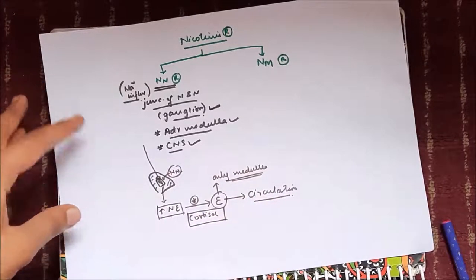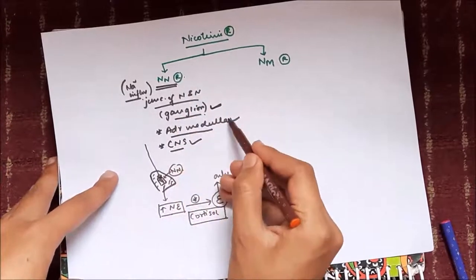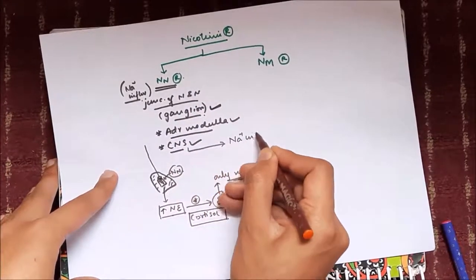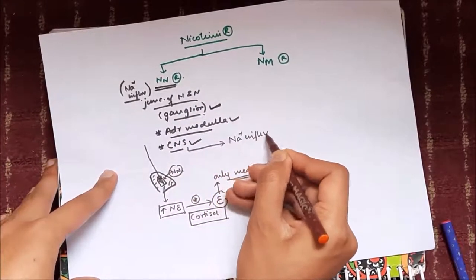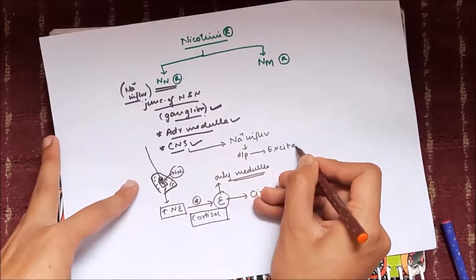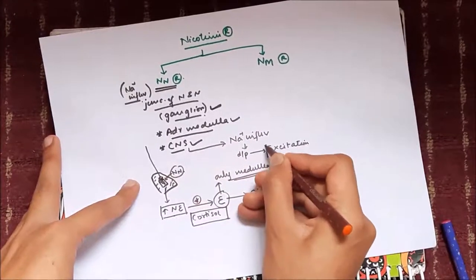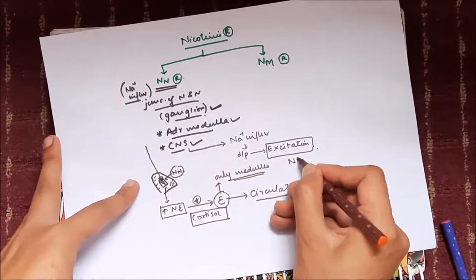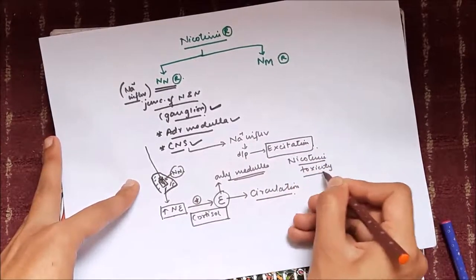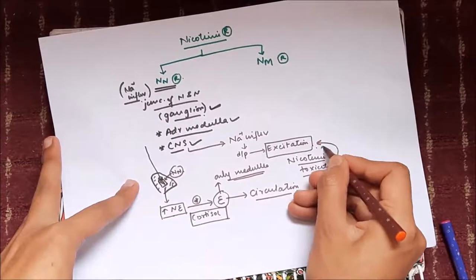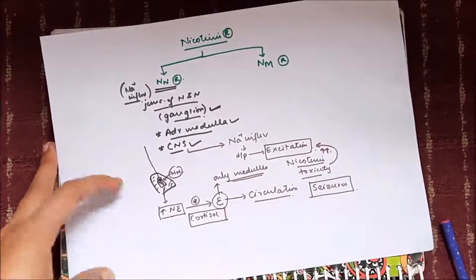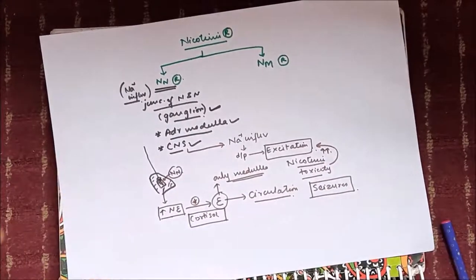We discussed the functions of nicotinic receptors in the ganglion and adrenal medulla. In the central nervous system, NN receptors cause sodium influx resulting in depolarization and excitation of the brain. This is significant because nicotinic toxicity can cause very high excitation of the brain and can even result in seizures.